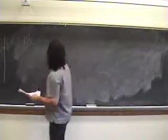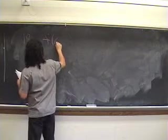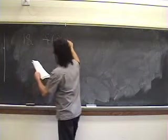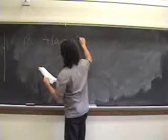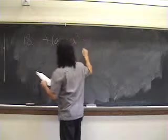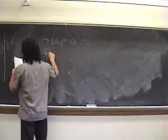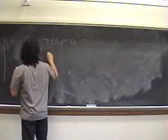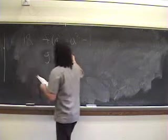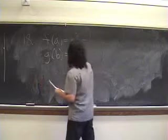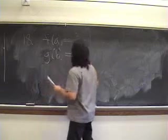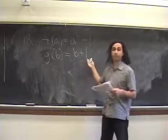18, you're given this symbol, f of a equals a squared minus 1. You're also told that the g machine takes a b and pumps out b plus 1.